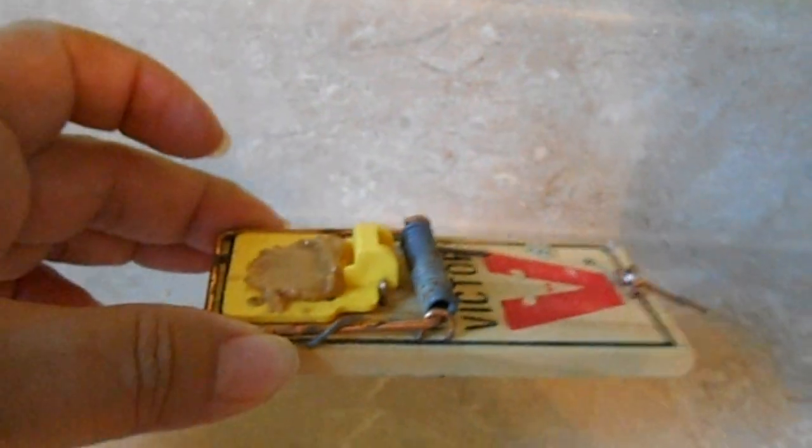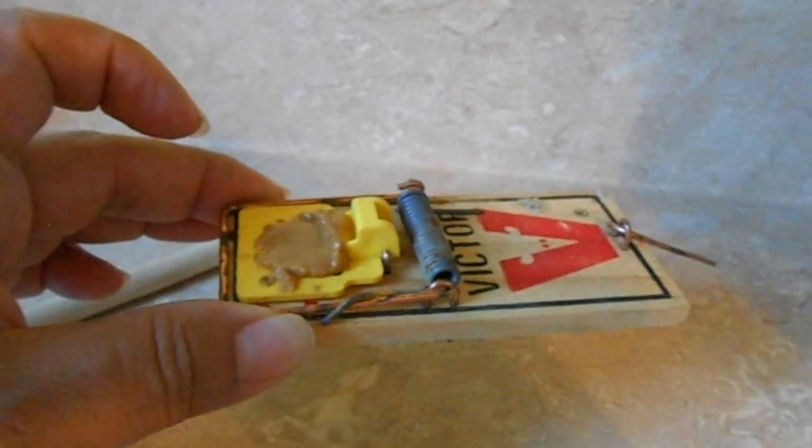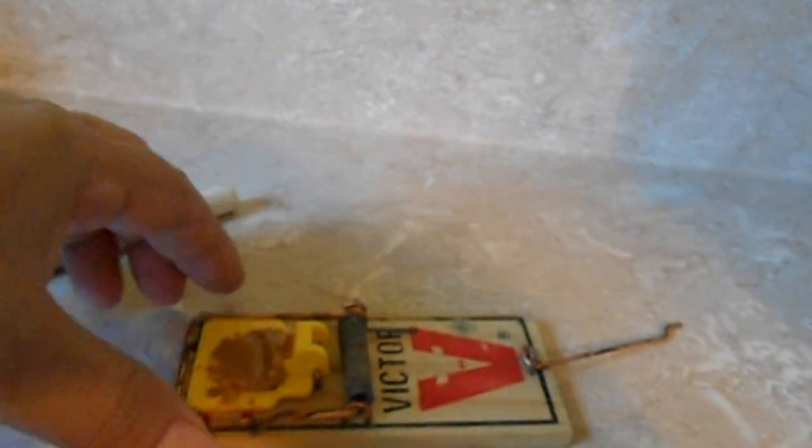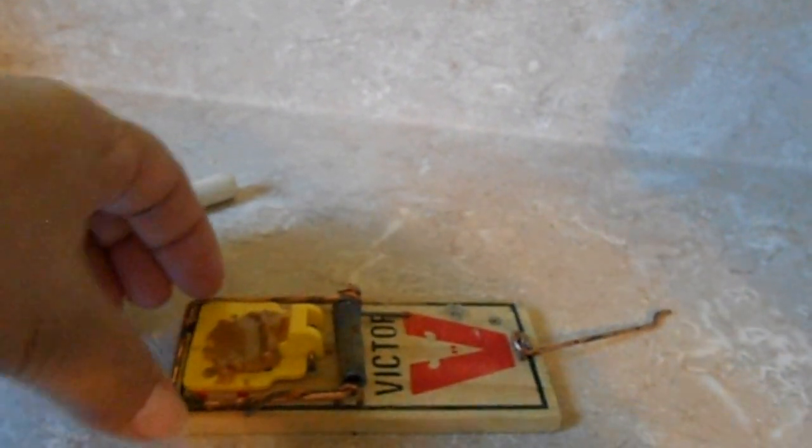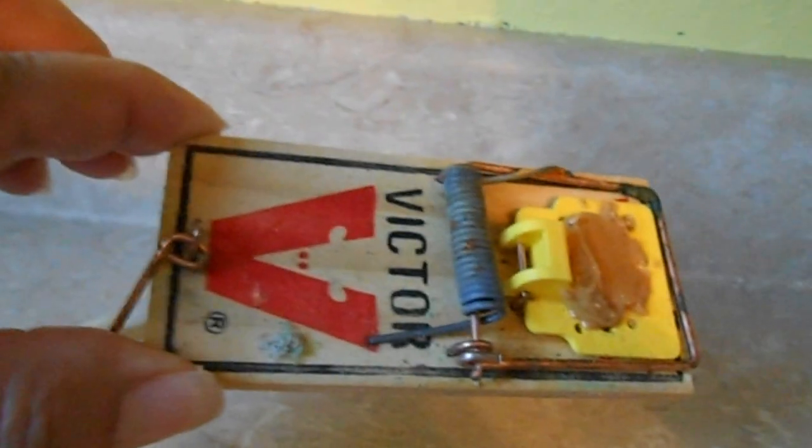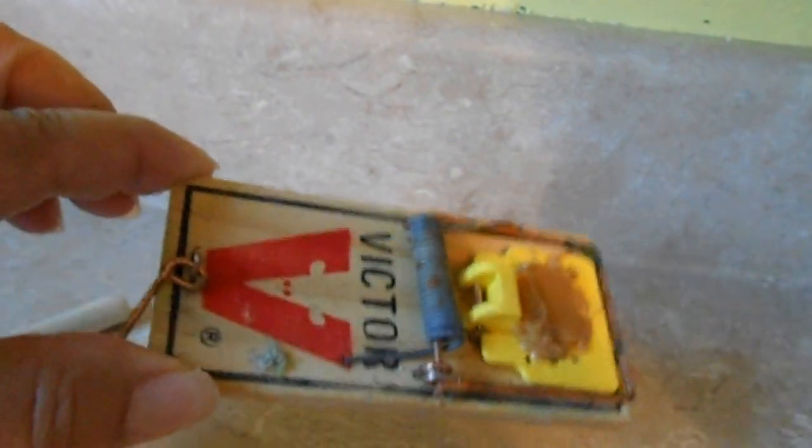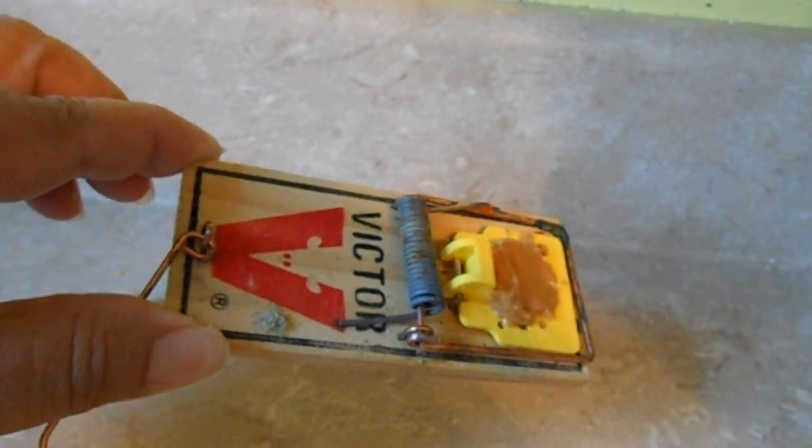That's why when you're putting your traps out and getting them set, you always want to hold from this side, the side that is opposite of where the bait is placed. You'd hold from this side where the V is, opposite of where the bait is placed, so that way if it does spring, you're not going to get hurt.